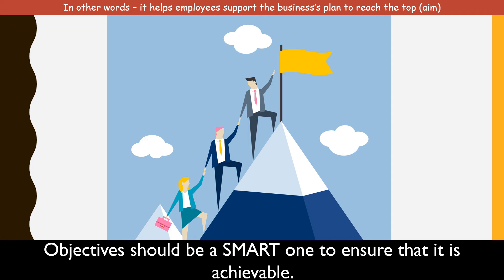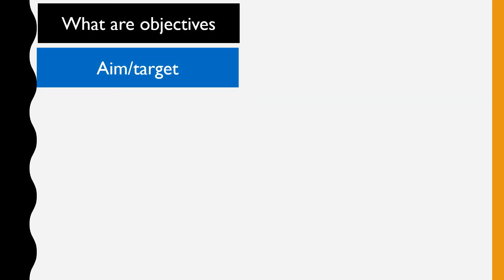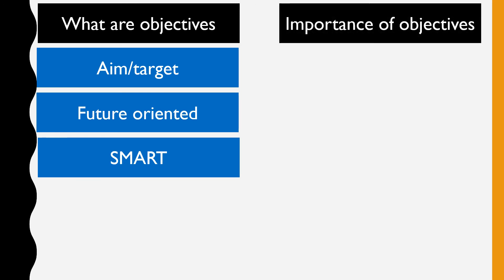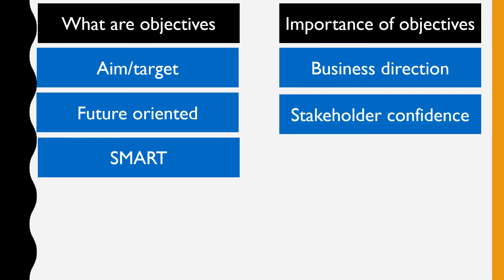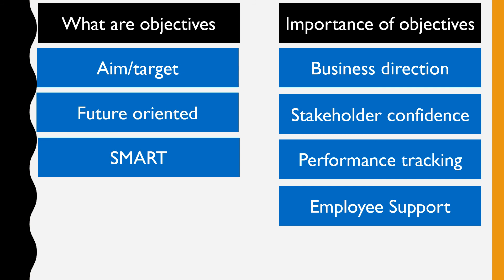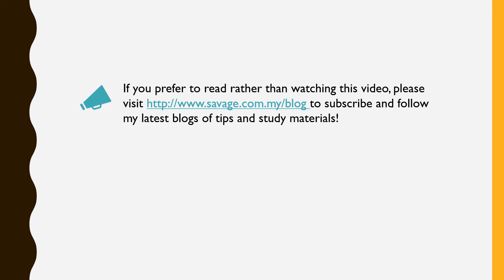The important terms we've learned today: objectives are aims or targets — they are future-oriented and should be set in a SMART way. The importance of objectives is to understand where the business is going, to have the confidence of important stakeholders, to assess business performance, and to gain support from employees. We've come to the end of class today. I'll be preparing more notes on this chapter. I hope the slides have been useful — until next time, have a pleasant day ahead.